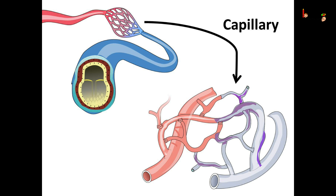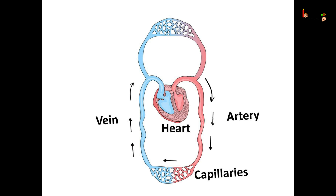How do cells get oxygen and food? The arteries divide into extremely thin-walled narrow blood vessels called capillaries. The walls of capillaries are so thin that gases and chemicals can diffuse into the cell, and gases and chemicals from the cells can also enter the blood. Thus, capillaries form a web-like network to reach the maximum number of cells. Capillaries join together to form veins.